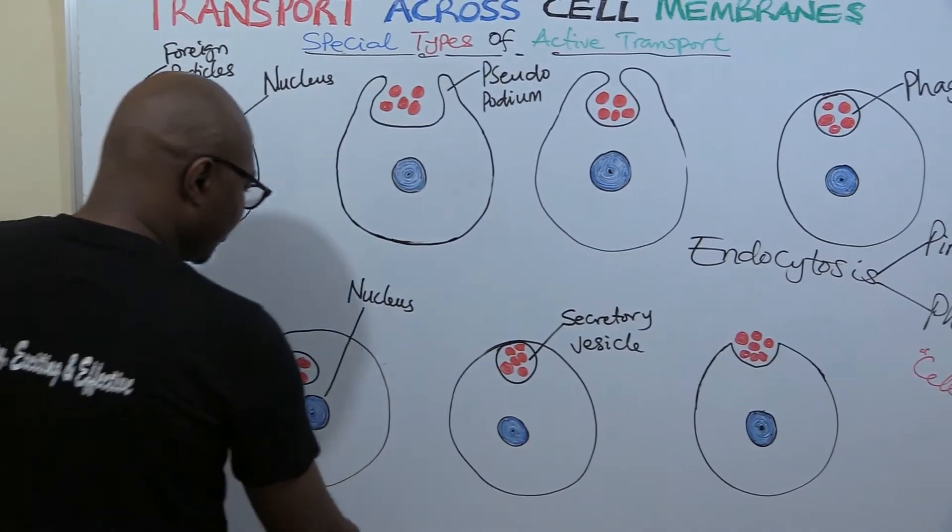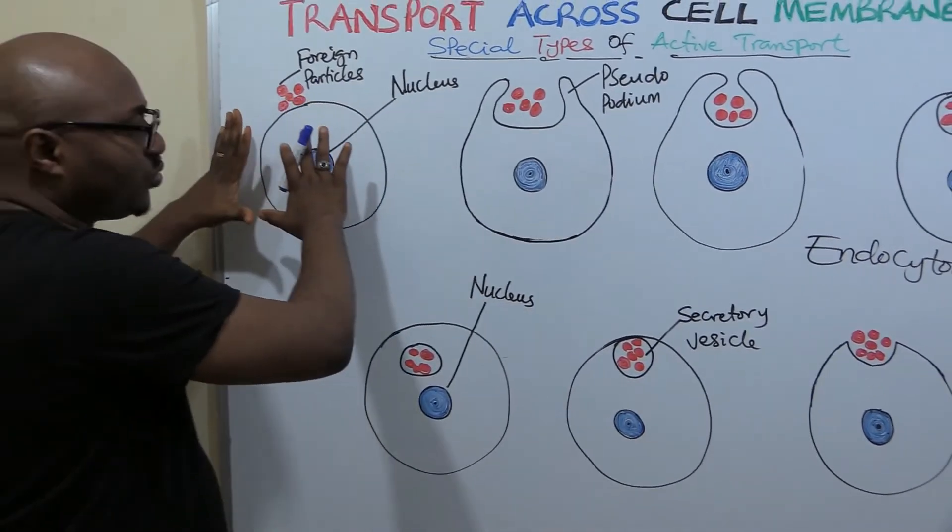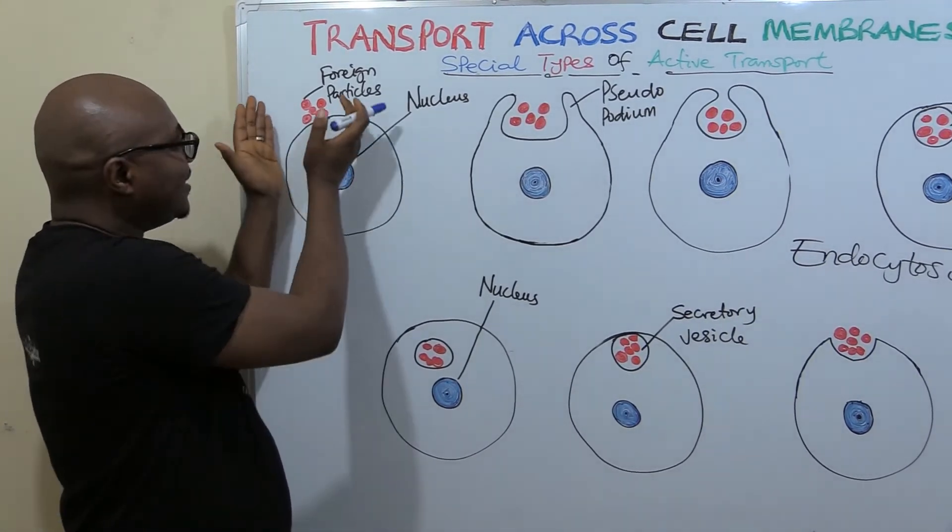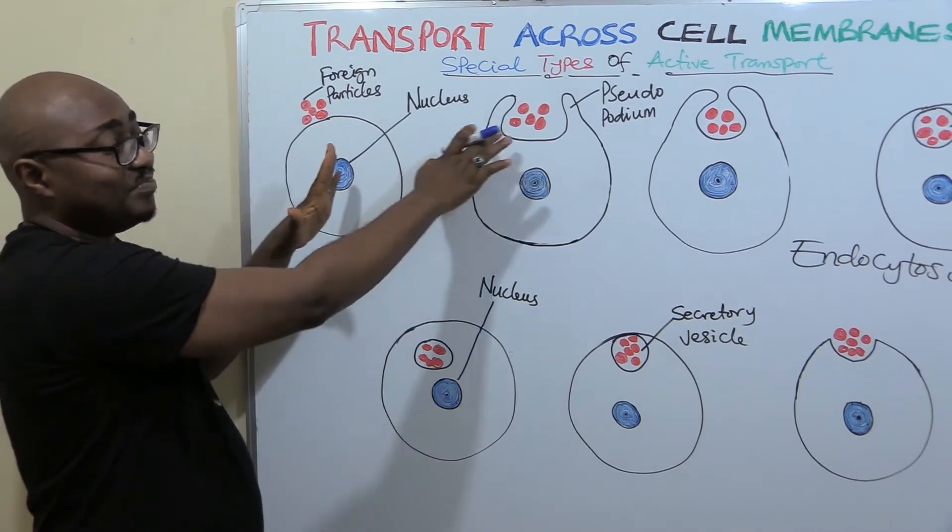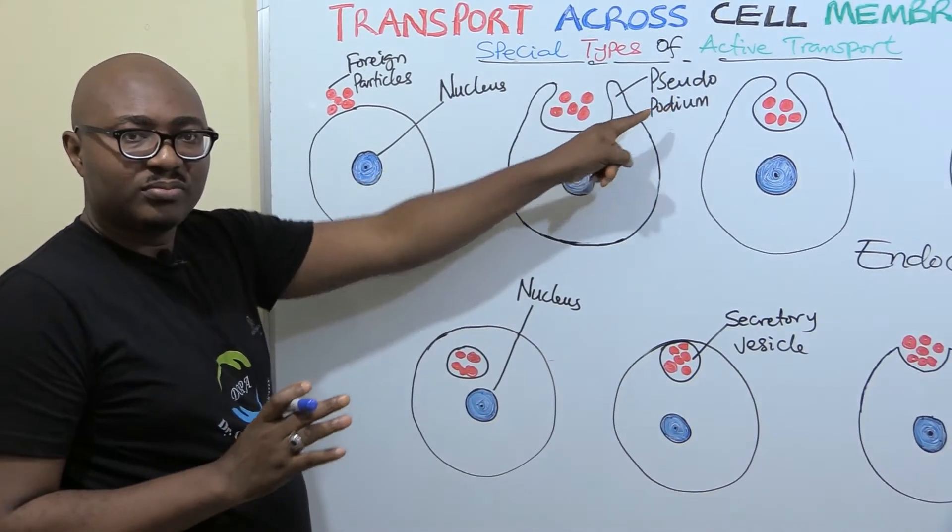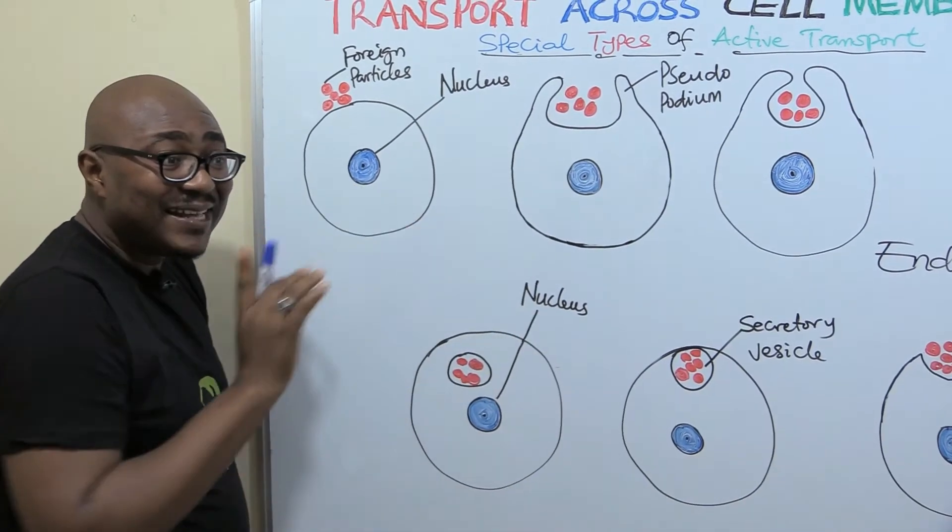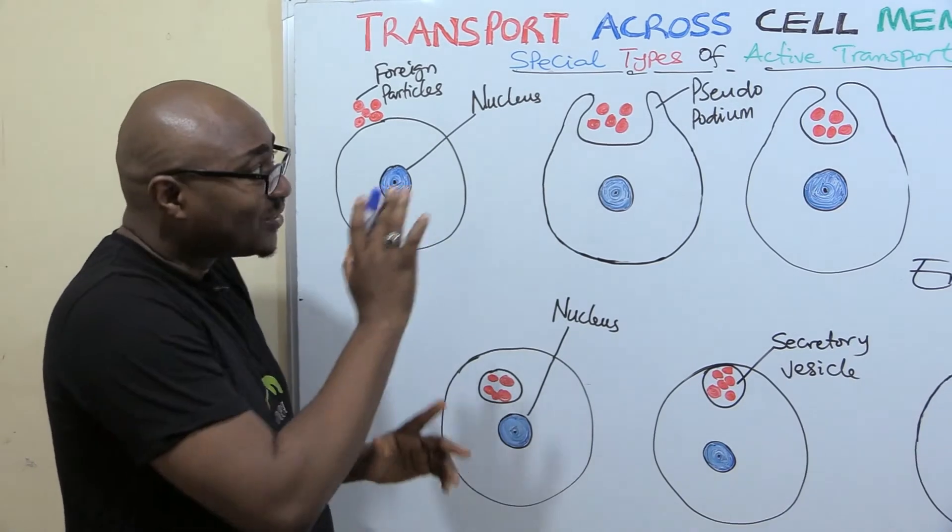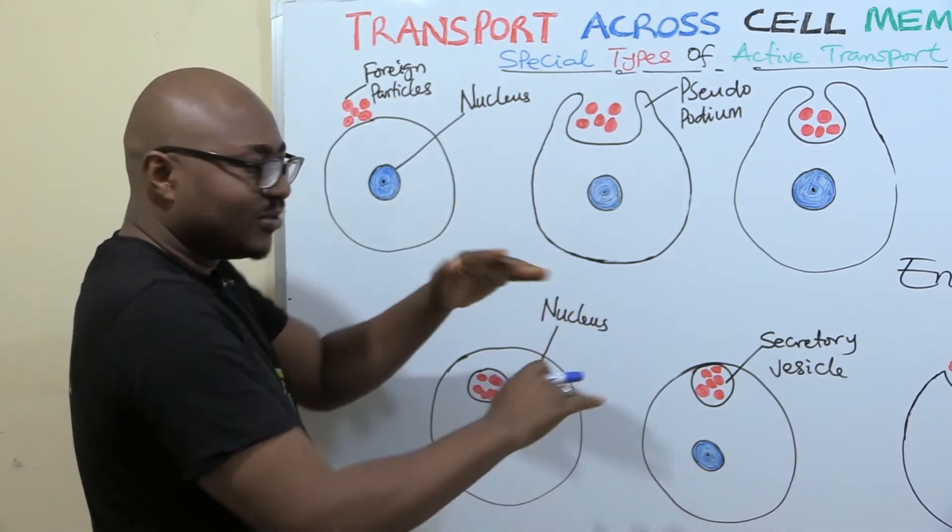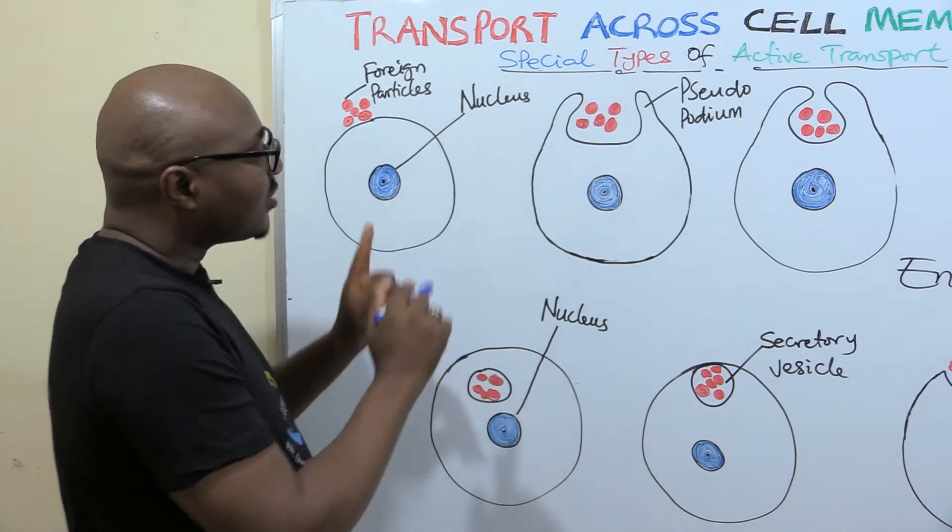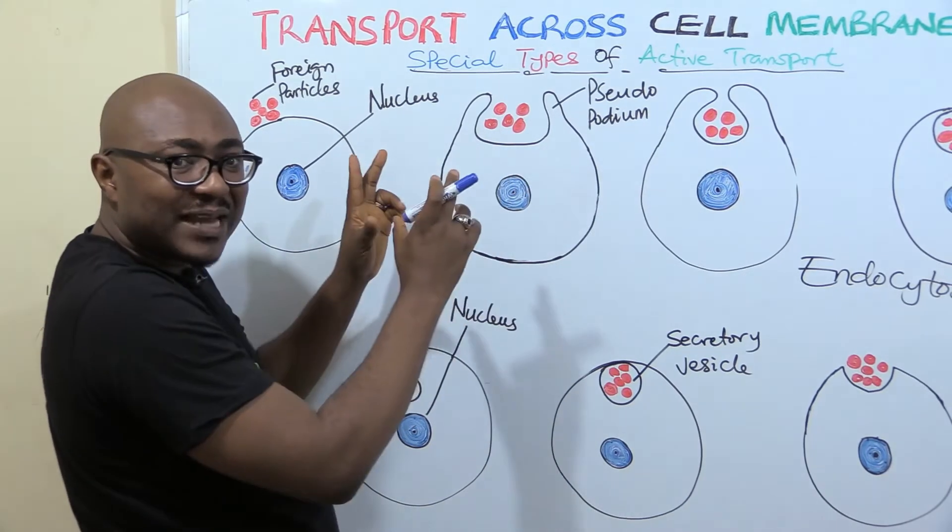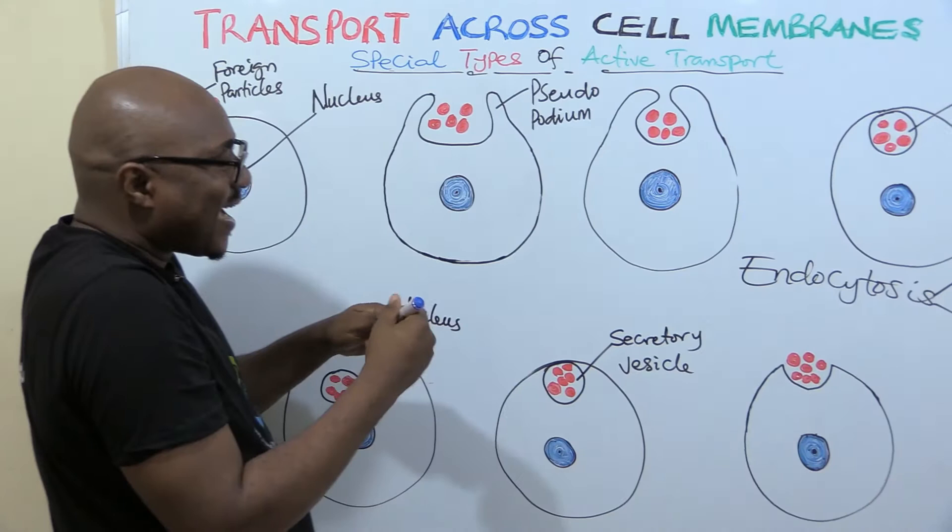Now, this is what happens. There are particles, macromolecules outside. The cell that needs to take in these particles, you see there are big, large particles. So what happens? The cell begins to develop pseudopodium, like false feet. A very prominent animal cell that does this thing is amoeba. When it moves, it stretches out false feet. So our human cells do the same thing. It stretches part of the plasma membrane.